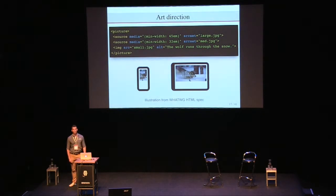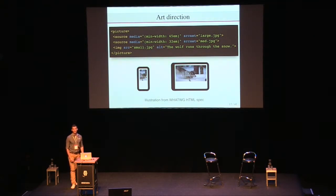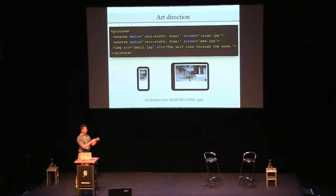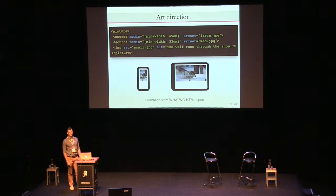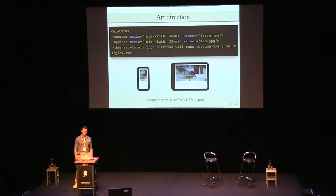But what is the media attribute for when you use picture? It's called art direction. The typical example is if you have a wide image for big screens and you want to crop it for smaller screens — like a zoomed-in view of a wolf so you can see it clearly, rather than it being a tiny thing. You use the media attribute to target different breakpoints and have different layouts. You don't necessarily need to only use width media features; you can also use orientation or aspect-ratio — anything you can use at-media in CSS.